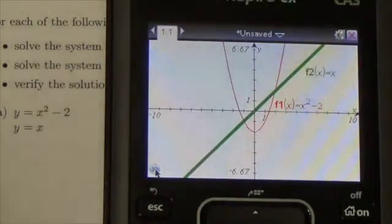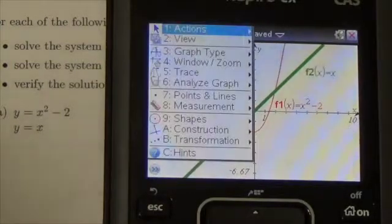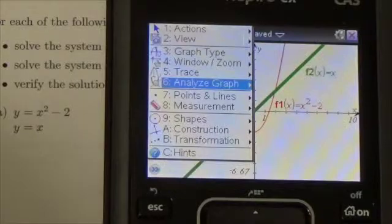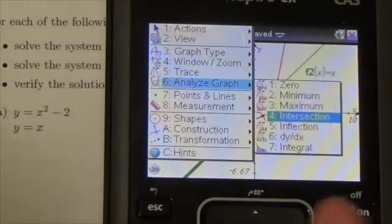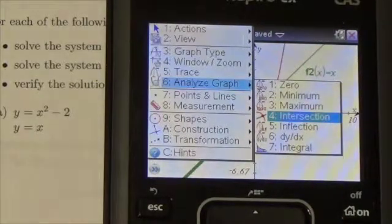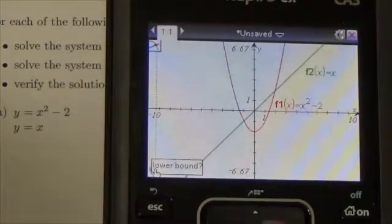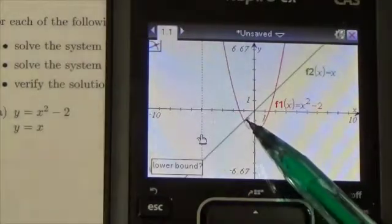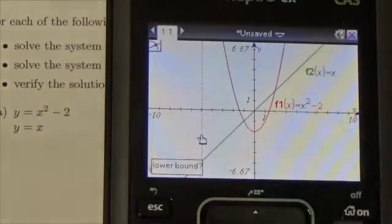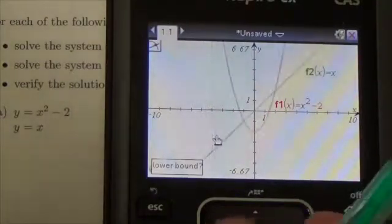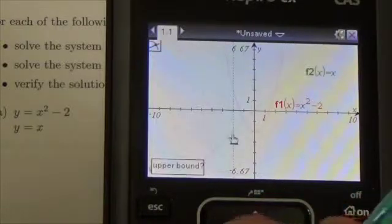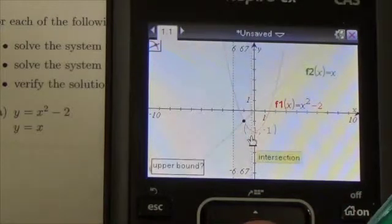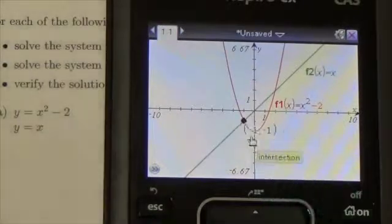Now to find the points of intersection, on the TI-83 or 84, you would press second trace to get into the calc menu. On the Inspire, I just press menu and come down to analyze graph. But it's the same thing. In both cases, I'm looking for intersection. Now, if I want to find this point of intersection right here between the parabola and the line, I simply move the hand just to the left of it, press enter, then move it just to the right of it and press enter.